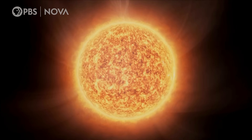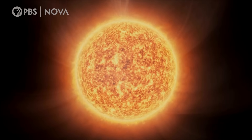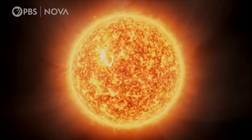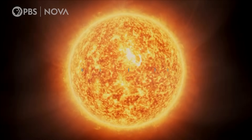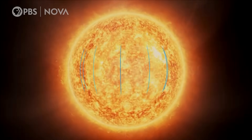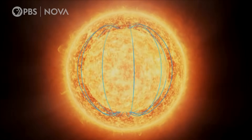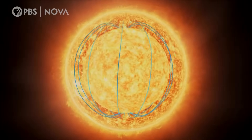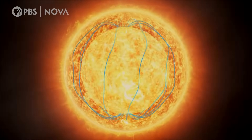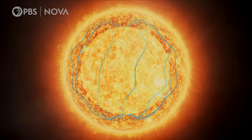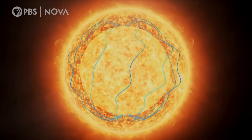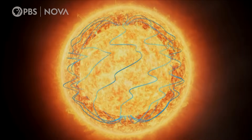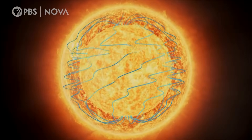But the Sun has even stronger magnetic fields, created by the movement of electrically charged particles churning beneath the surface. Because the plasma is moving faster in some regions, these fields bend and twist.